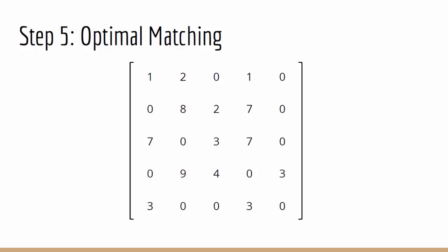Moving on to step 5, which is picking our optimal matching. We now need to select zeros so that there is only one zero in each row and column. For example, if we select this zero in the first row, we cannot also select this zero. Following this rule, we get an optimal matching like this.